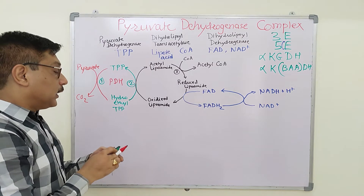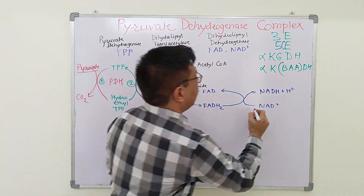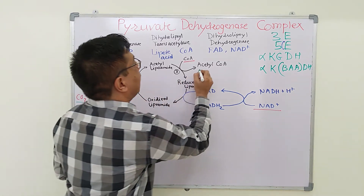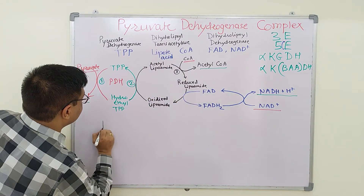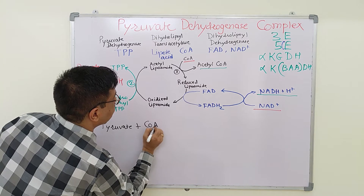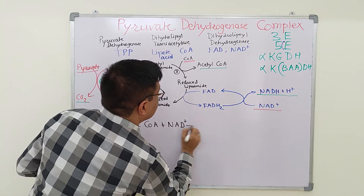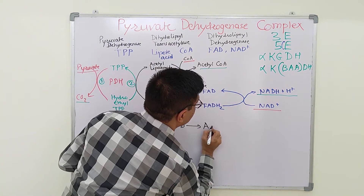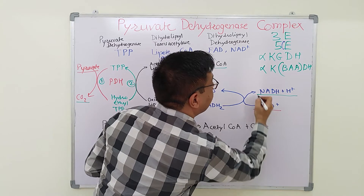The reactants are pyruvate, coenzyme A, and NAD⁺. The whole reaction can be written as: pyruvate + coenzyme A + NAD⁺ → acetyl-CoA + CO₂ + NADH + H⁺.